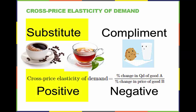Substitute goods have positive cross price elasticities of demand. If good A is a substitute for good B, like coffee and tea, then a higher price for B will mean a greater quantity consumed of A.